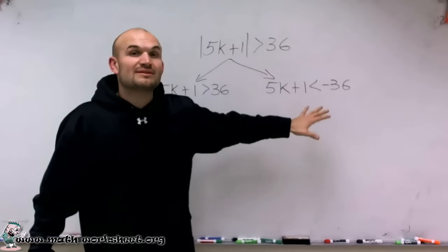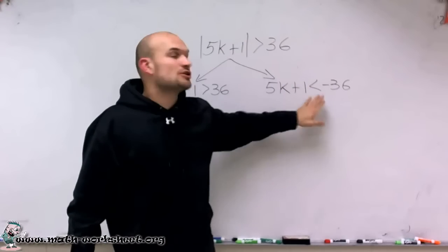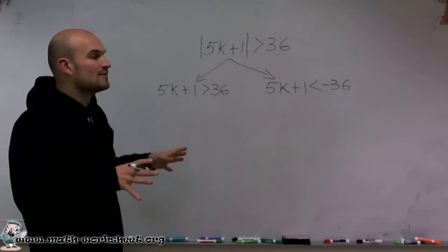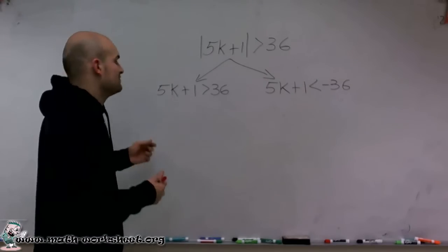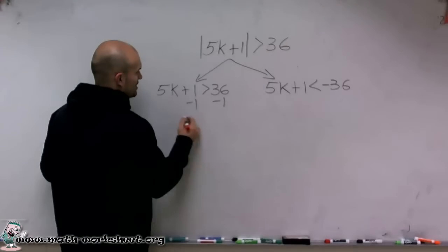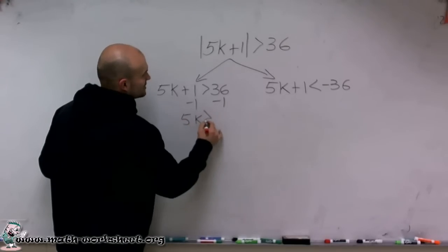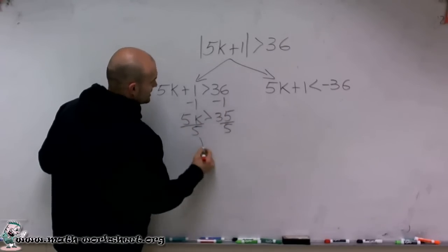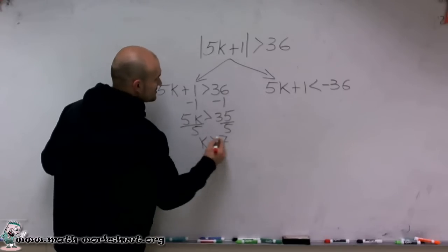And remember, since we're combining with negative and inequality, we've got to make sure we flip the sign. Now that I have my absolute values isolated, now what I can simply do is just solve for each variable. So I subtract 1 on both sides, and I get 5k is greater than 35, divide by 5, and I get k has to be greater than 7.